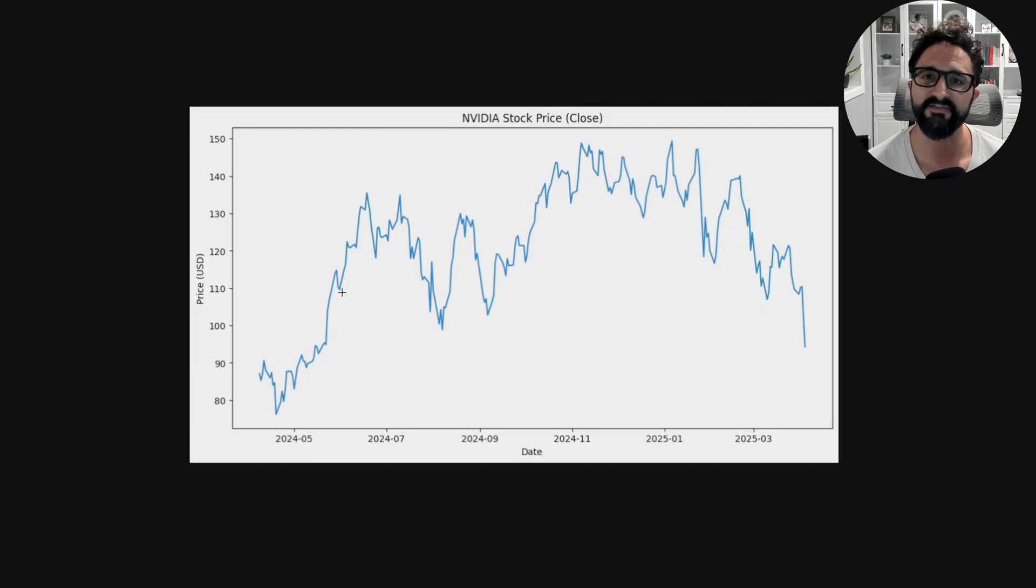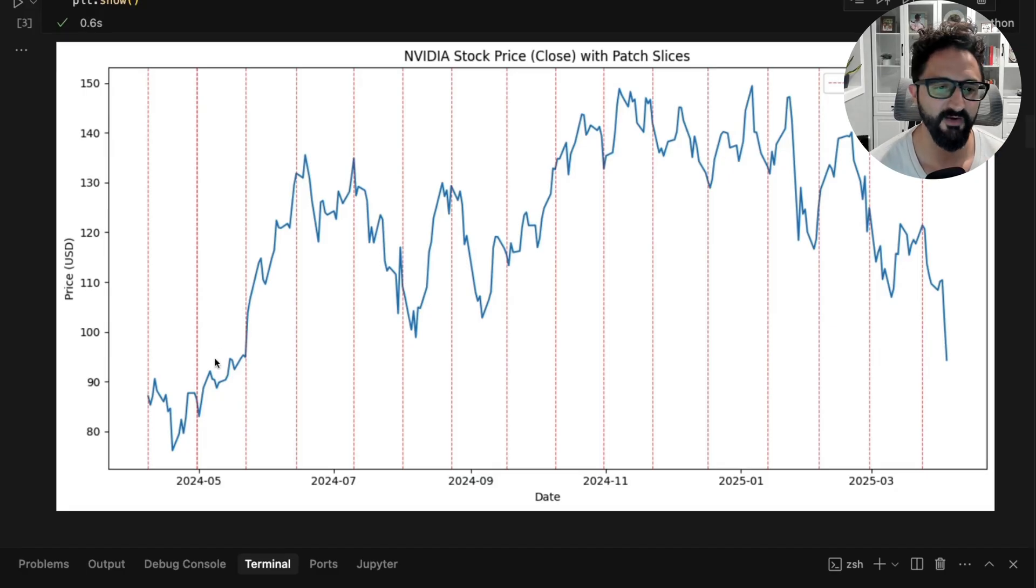What we do to turn time series into tokens for the model to understand is we slice this up at a consistent patch length into different patches, which is really just like every 10 bars we're creating a slice here. That window, the data within this window here, becomes turned into a single patch. We do that for the entire time series. Each one of those patches gets their own embedding and gets treated like a token. This was popularized by a paper called PatchTST, which I'll link in the description.